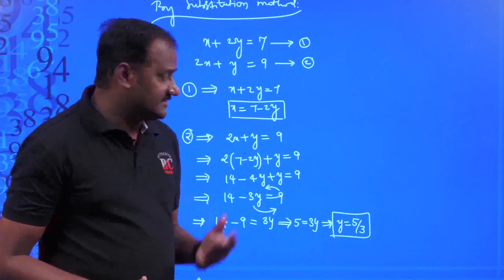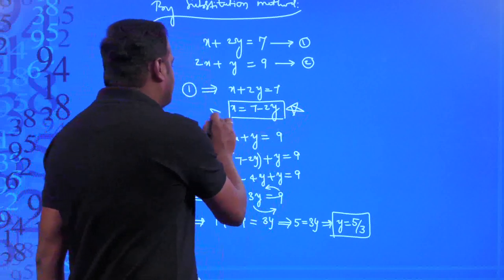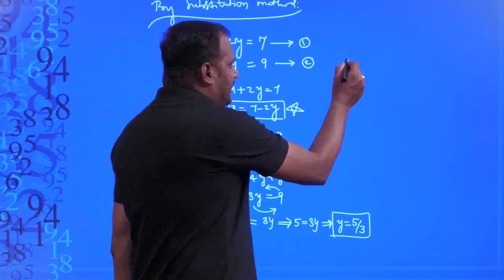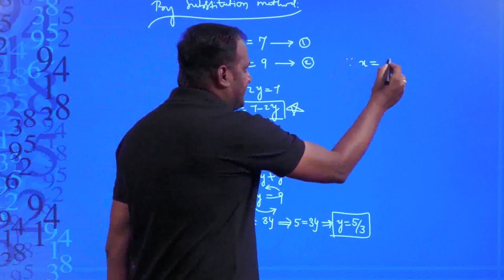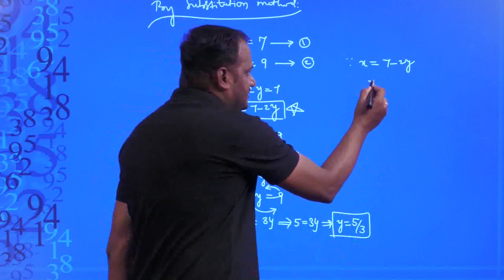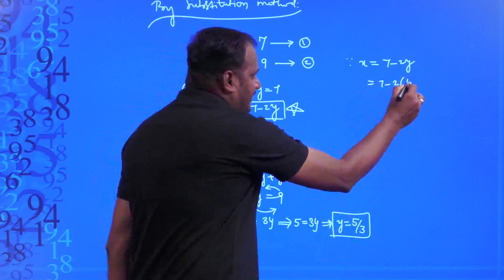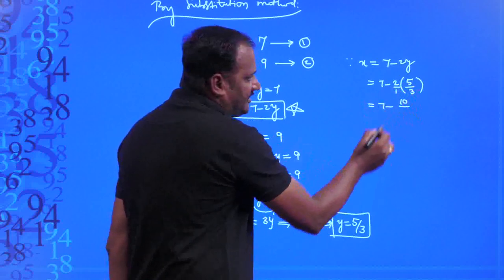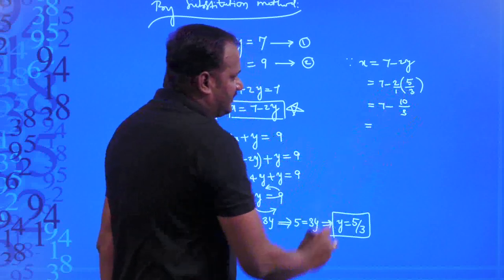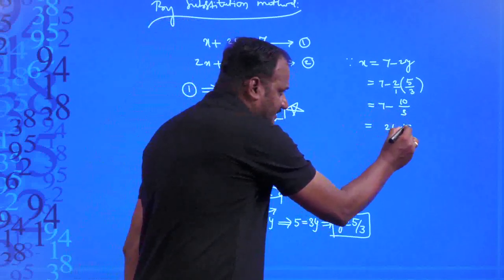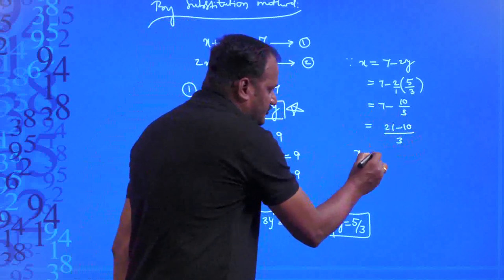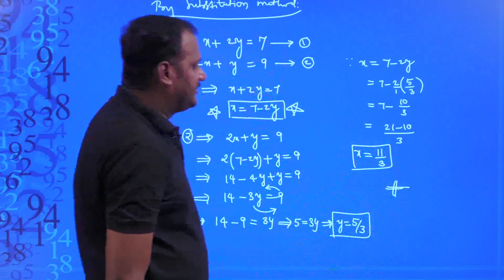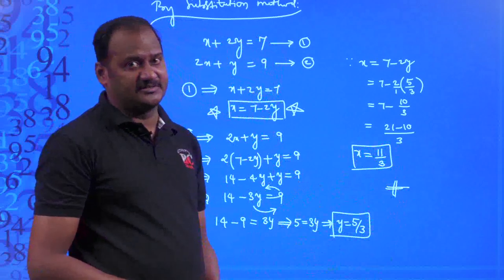After getting the value of y, to obtain x, substitute y = 5/3 into x = 7 − 2y. That gives x = 7 − 2(5/3) = 7 − 10/3 = (21 − 10)/3 = 11/3. So the value of x is 11/3. This way you can find out the values of x and y by the substitution method.